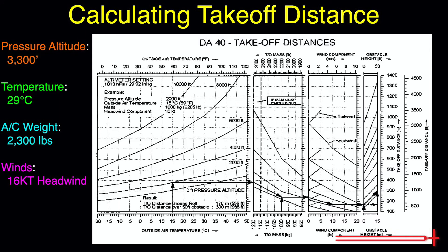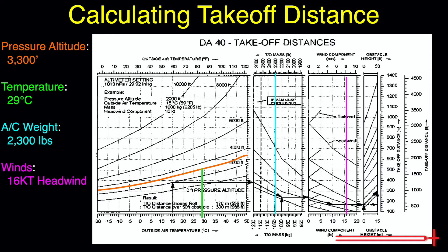Now that we've got all our data, we can make things really easy by plotting all these values on the chart. Beginning with pressure altitude, we will draw a line following the curved lines to the left of the chart where 3300 feet would fall. Next, we can draw a line straight up from the other three values: our temperature of 29 degrees Celsius, our weight of 2300 pounds, and our winds of 16 knots.